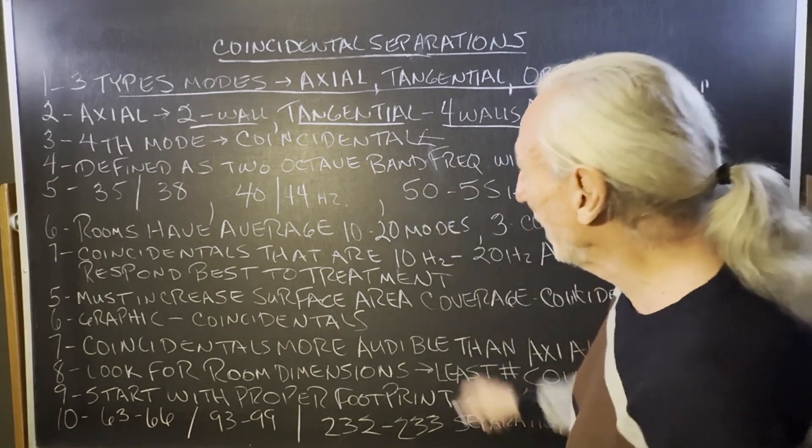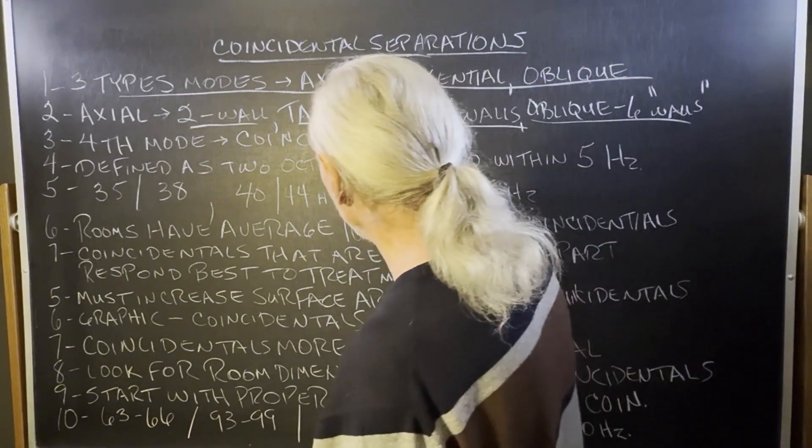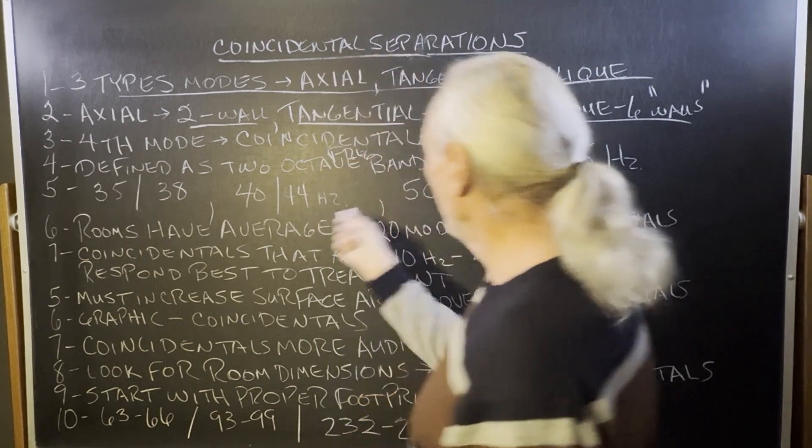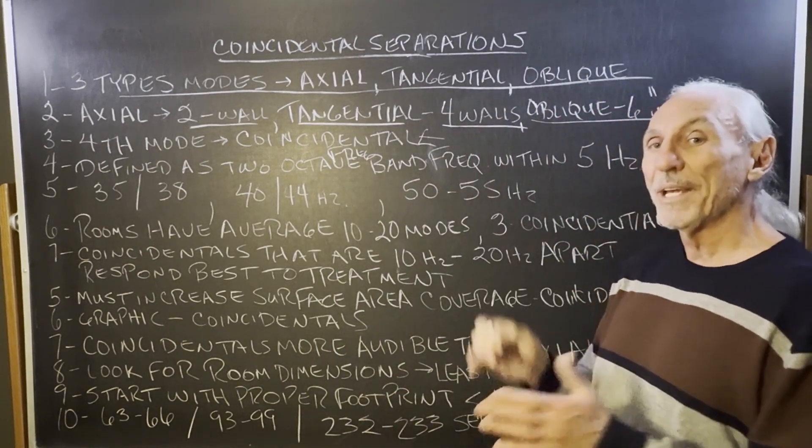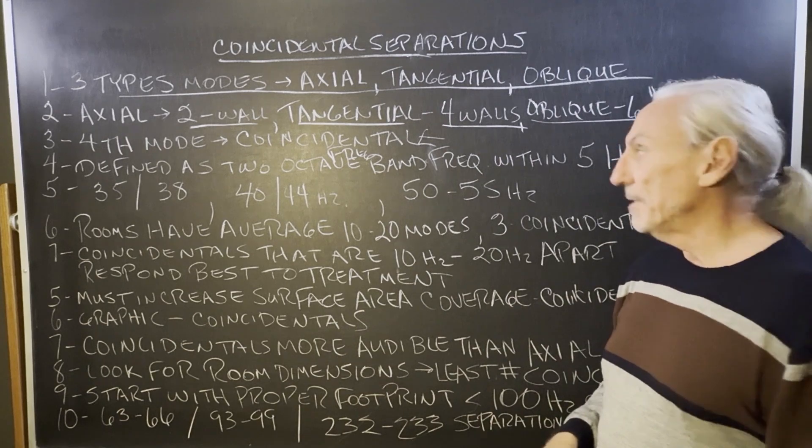Coincidental is two octave bands, two frequencies even, that are within five hertz of each other. When they get within five hertz of each other, they get louder. That's the way you need to think about it.